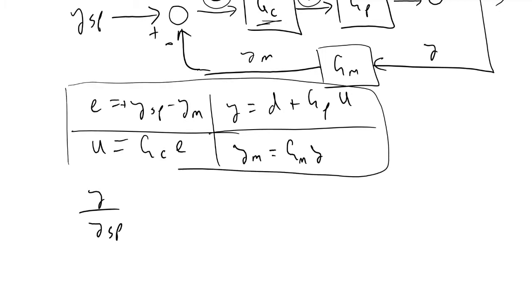And so a good exercise would be to go through and evaluate these. And what you will find is that Y over Y_SP is equivalent to GC times GP divided by 1 plus GC×GP×GM.